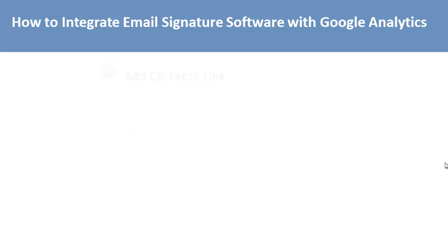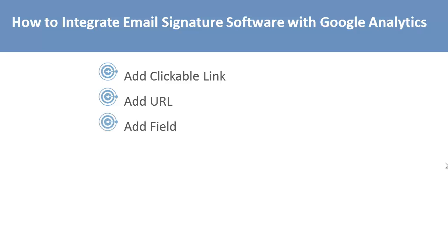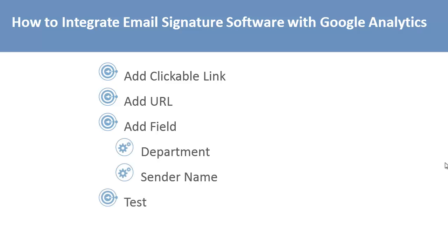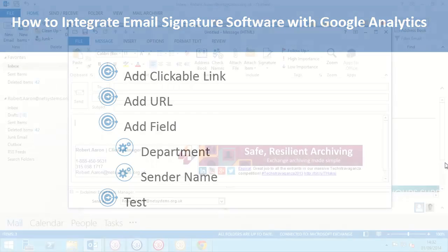First I'm going to add a clickable link — in this case a clickable banner image, but it could be hyperlink text or even a social media icon, whatever you want. Then we're going to add a URL that it will link to, and within that URL we'll add a field that will be auto-completed, so you could do it based on department or sender name. Then we're going to test and make sure that works. Let's get started.